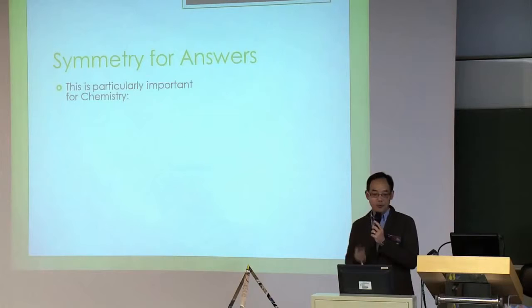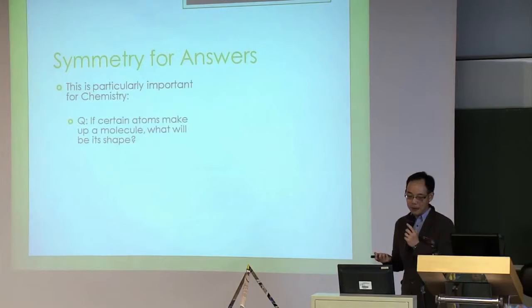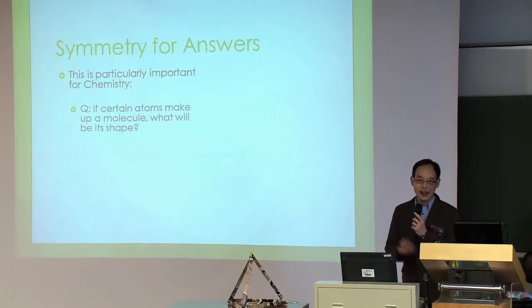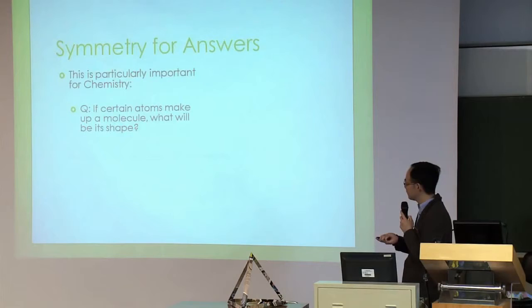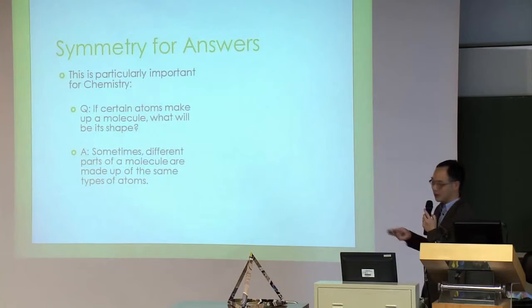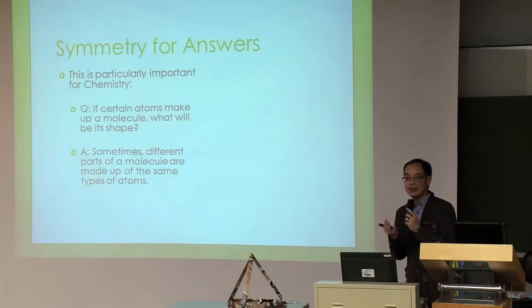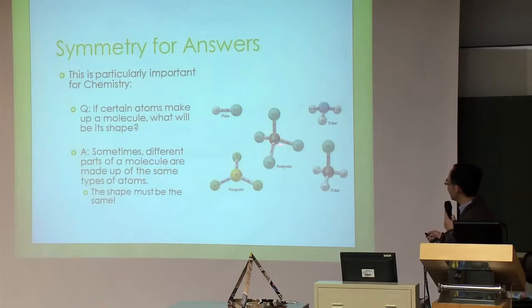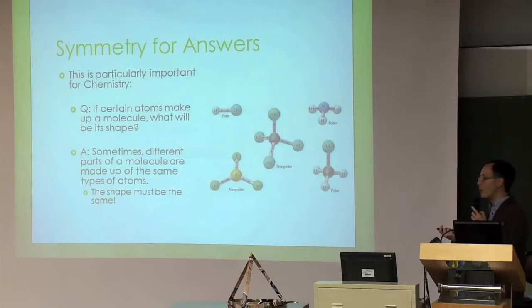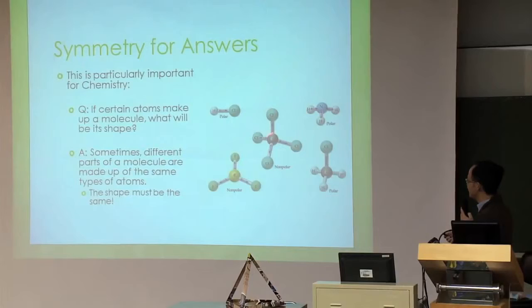Such kind of reasoning is particularly important for chemistry. In chemistry we run into many atoms making up molecules, and at some point you may wonder: if I have a compound made up of a certain number of atoms, what will the molecule look like? Symmetry helps, because sometimes different parts of a molecule are made up of exactly the same type of atoms. For example, if I look at this molecule, I have something in the center connected to four identical atoms - so the resulting molecule will look the same no matter which of the four directions I'm looking along.